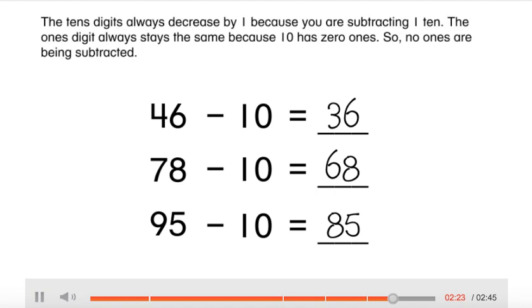The tens digits always decrease by 1 because you are subtracting one ten. The ones digit always stays the same because 10 has zero ones, so no ones are being subtracted.